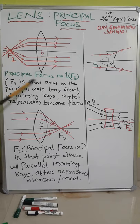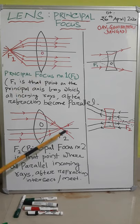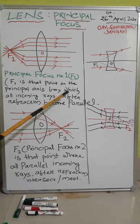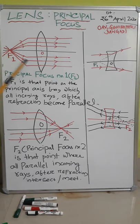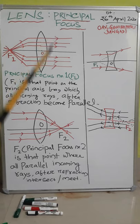In convex lens, first principal focus number one or F1 - F1 is on this side, F2 is on this side. So F1 is that point on the principal axis from which all incoming rays after refraction become parallel. That means F1 is that point where any incoming rays, when they undergo refraction, become parallel.